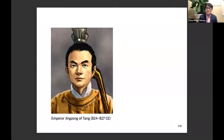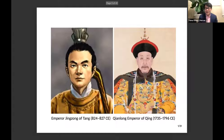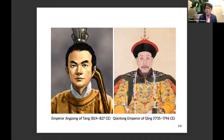The first is a lesser-known one: Jingzong of the Tang Dynasty. Tang Jingzong became emperor when he was 14 years old in 824. He sat on the throne for merely three years, and in 827, when he was only 17 years old, he was assassinated by elites right in the court. The second emperor is the well-known Qianlong Emperor of the Qing Dynasty, who became emperor in 1735 and sat on the throne for over 60 years, abdicating in 1796 — one of the longest-reigning monarchs in world history.